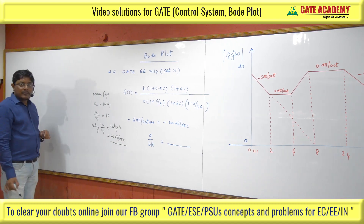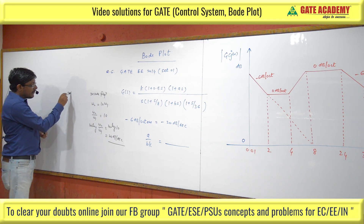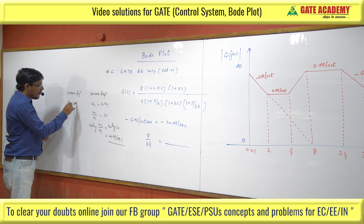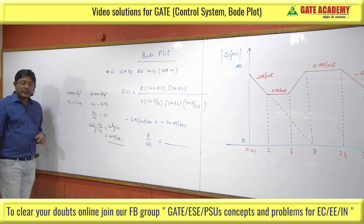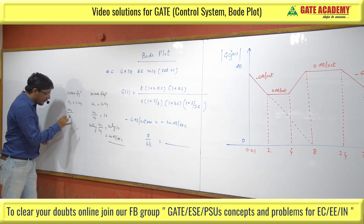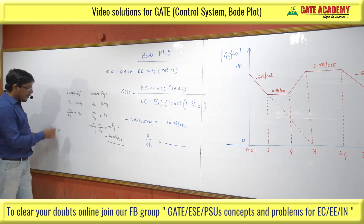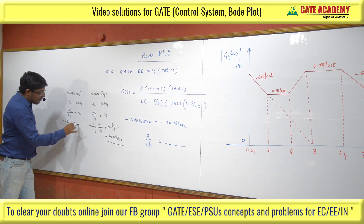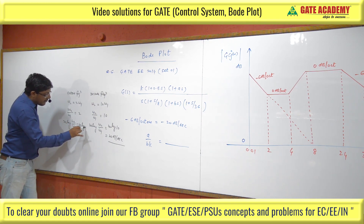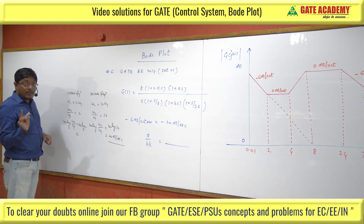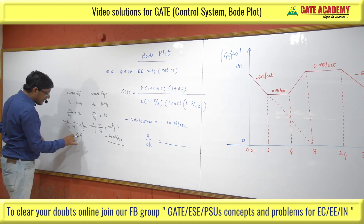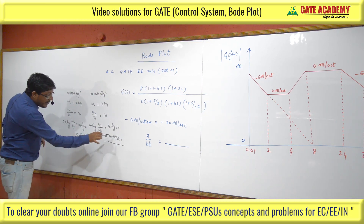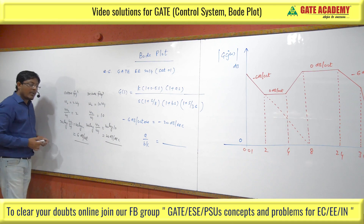Now for octave frequency: omega 2 equals 2 times omega 1, so the ratio omega 2 upon omega 1 is 2. Taking 20 log(omega 2 / omega 1) = 20 log(2) = 20 × 0.3010, which gives approximately 6 dB per octave. So 20 dB per decade corresponds to decade frequency, and 6 dB per octave corresponds to octave frequency.